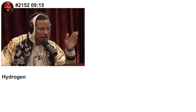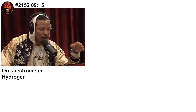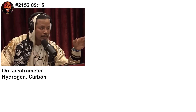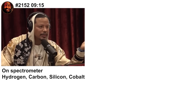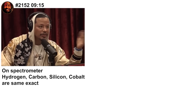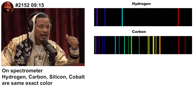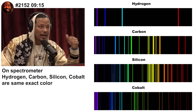Back to Terence. He claims the relationship between hydrogen on the spectrometer and carbon, silicon, and cobalt shows the same exact colors. Here's the spectrometer signatures for each of those four elements. Same color? There's not even the same number of colors.